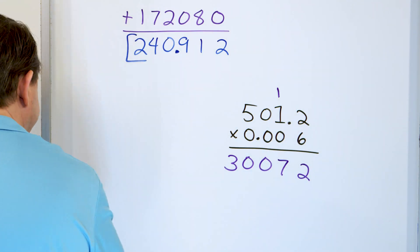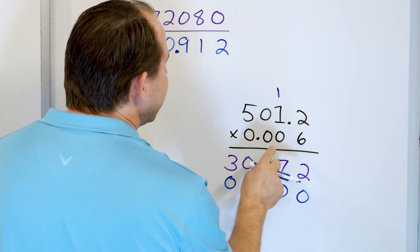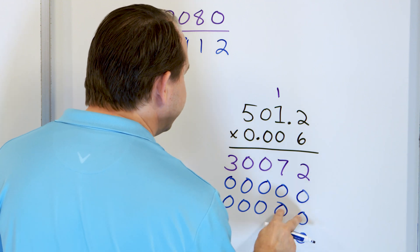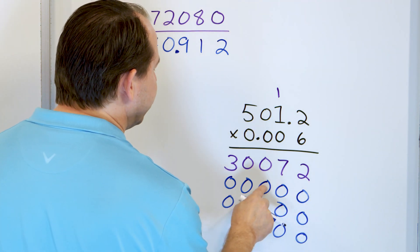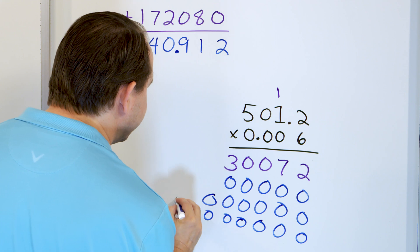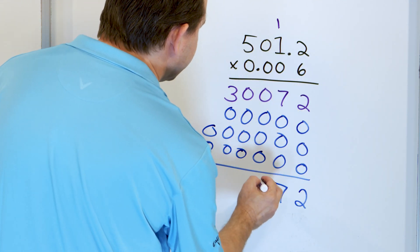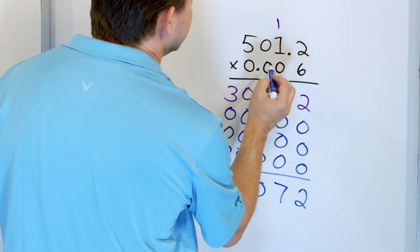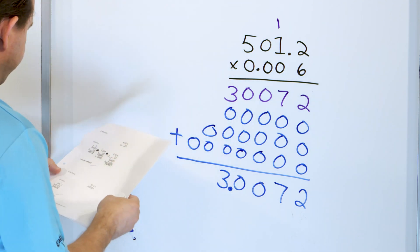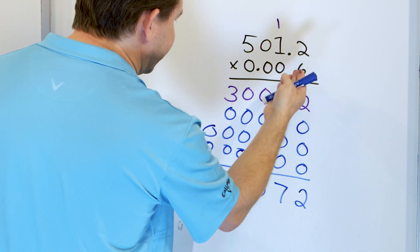Let me show you quickly. Multiplying by the next 0: drop a 0, then 0 times everything gives all zeros. Then dropping two 0s and multiplying by the third digit also gives all zeros. Then dropping three 0s for the leading zeros — none of those zeros do anything. So you're just going to have a 2, a 7, then a 0, a 0, and a 3. Now let's find the decimal: 1, 2, 3, 4 digits after the decimal point in the problem, so the answer must have 4 digits after the decimal: 3.0072.